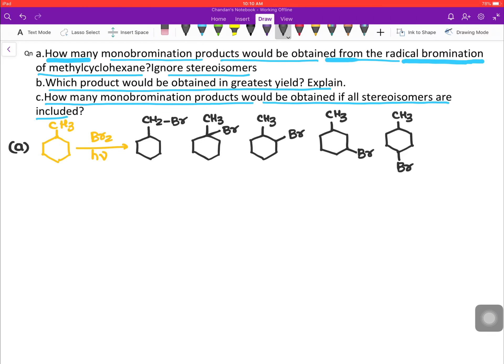Now move to the second one: which product would be obtained in greatest yield? Basically, we have to find which will be obtained in greatest yield. Now we know that the monobromination product is highly selective in nature.